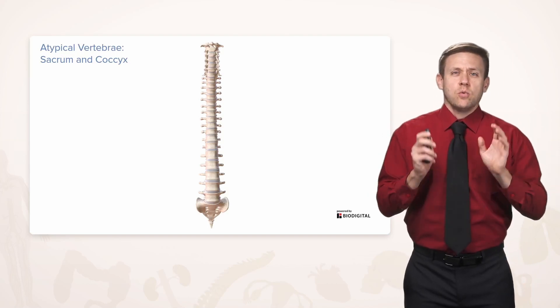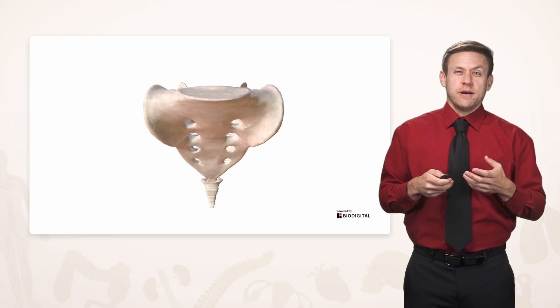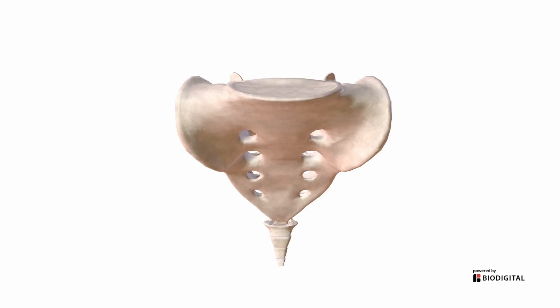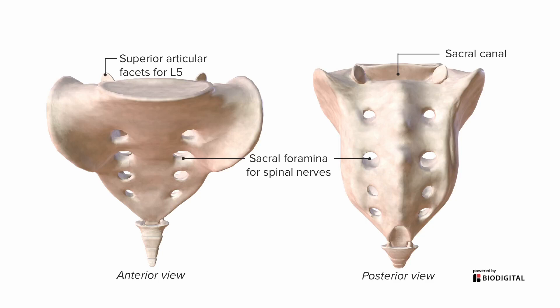The other odd vertebrae are at the very inferior end: the sacrum and coccyx. This is where many vertebrae have fused into a single bone. The sacrum consists of typically five fused vertebrae forming a single bone. It still has superior articular facets for the last lumbar vertebra, L5. Looking through it, there are still openings called sacral foramina — foramen meaning hole — for spinal nerves in this area to exit. Spinal nerves enter at the superior portion through an opening called the sacral canal, where the spinal cord transitions to individual spinal nerves that exit through the sacral foramina.